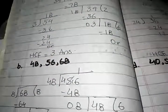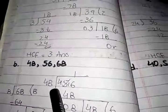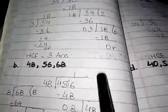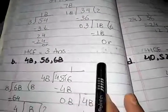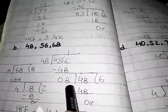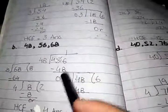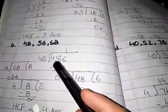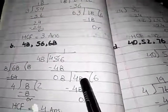Question B is 48, 56, and 68. First of all we divide 48 on 56. 48 ones are 48. After subtraction, 8 is our answer and 8 is the next divisor. 48 is next dividend. 8 sixes are 48.